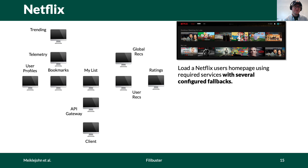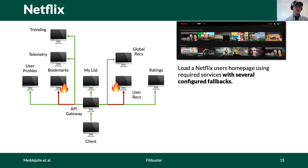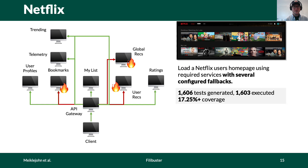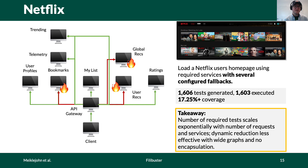Our next example is Netflix, where a number of services are contacted by an API gateway to load each row on the user's homepage when you log in. Each of these services has a configured fallback — if it's unavailable, a request is made to a different service. To cover this, we had to generate 1,606 tests and executed 1,603, so we had very little effect of dynamic reduction. This is because the number of required tests scales exponentially with the number of service requests based on fanout of a particular service — where all services are contacted by one particular service, we must explore all combinations of services failing with every other service, since the API gateway may contain a conditional based on some combination of service failures.